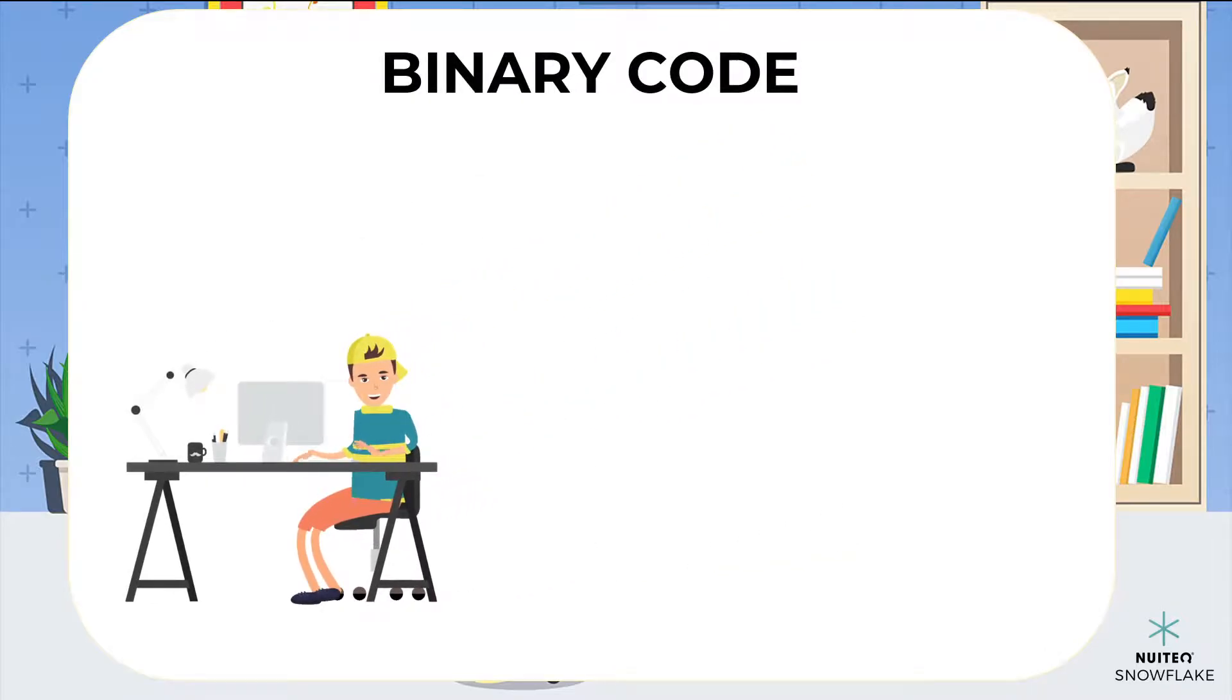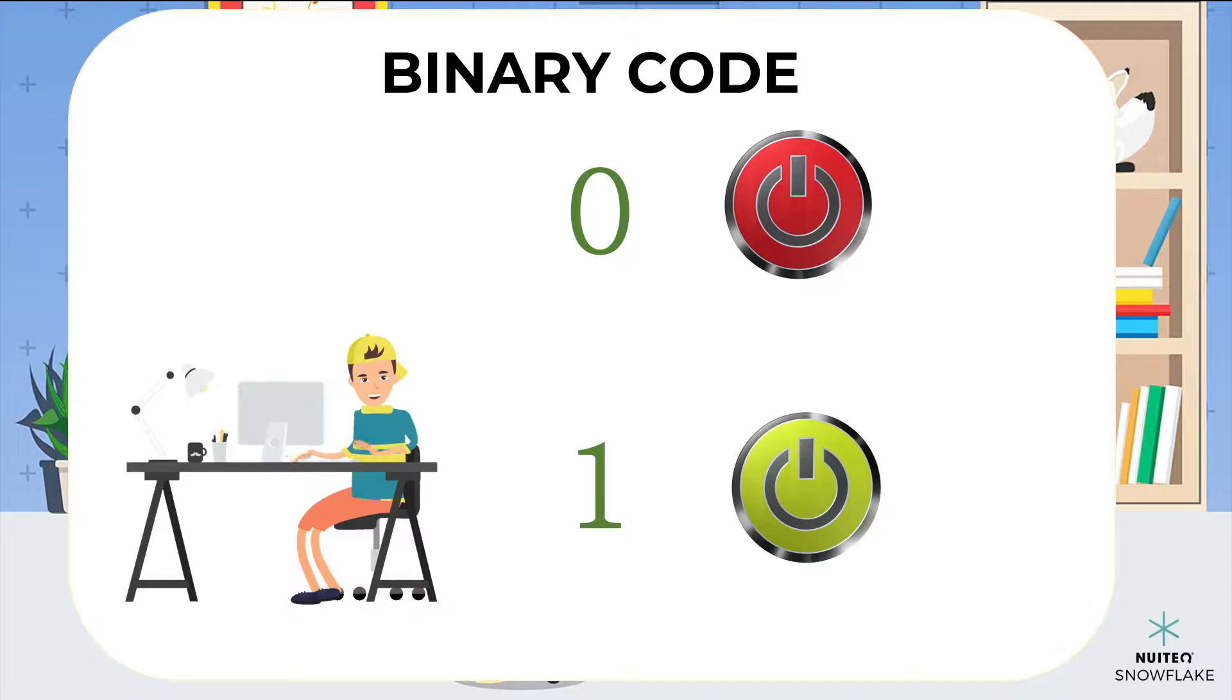In the same way that Morse code uses short and long signals and combines them in patterns, binary code uses 0s and 1s, which it combines in patterns. A 0 means that a switch in the computer is off, and a 1 means that a switch is on.